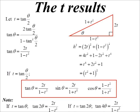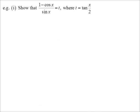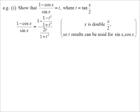So the standard one is T equals tan theta on two, and we use it for tan theta, cos theta, sine theta. Alright, let's prove this little relationship. One minus cos X on sine X is simply equal to T, where T is representing tan X on two. So I'll substitute in my T results.